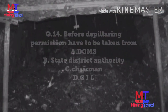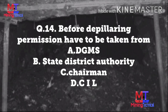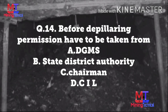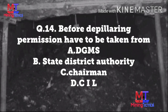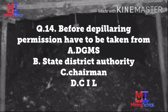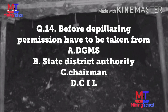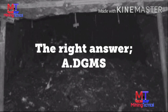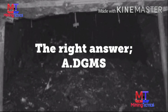Question number 14: Before depillaring operation, permission has to be taken from — Option A: DGMS, Option B: State/District Authorities, Option C: Chairman, Option D: CIL (Coal India Limited). Depillaring start karne se pehle kis se permission lena padta hai — the right answer is Option A: DGMS. Related regulation is Regulation 100.